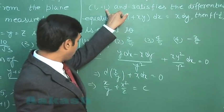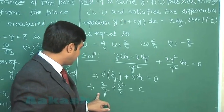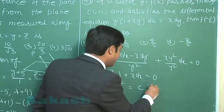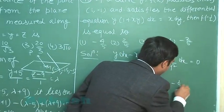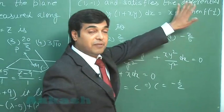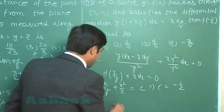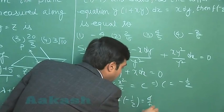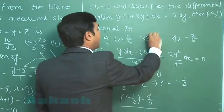This curve is passing through the point (1, -1), substitute it here to get when we say (1, -1), we are getting c as minus 1/2 and then we need the value of the function at x equals minus 1/2. We can get the value as simply 4/5 as the third option.